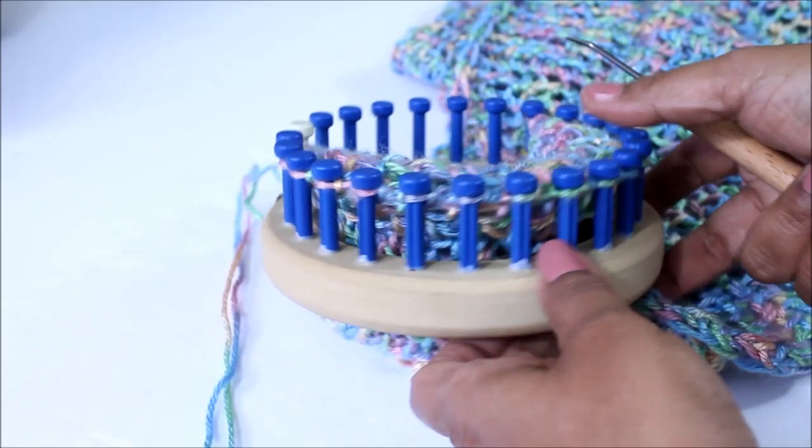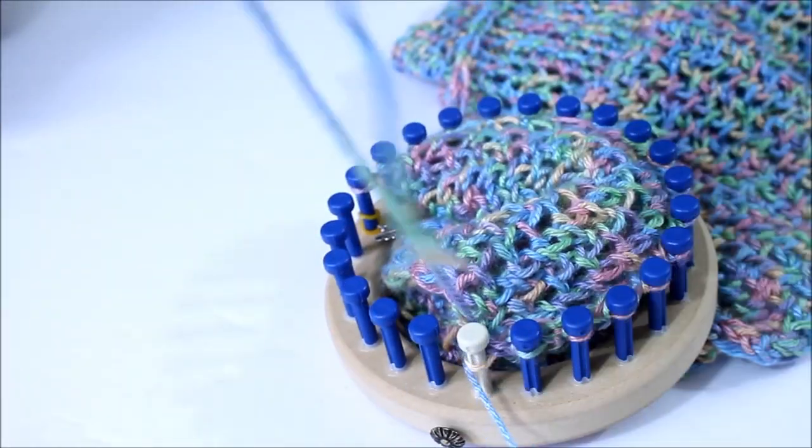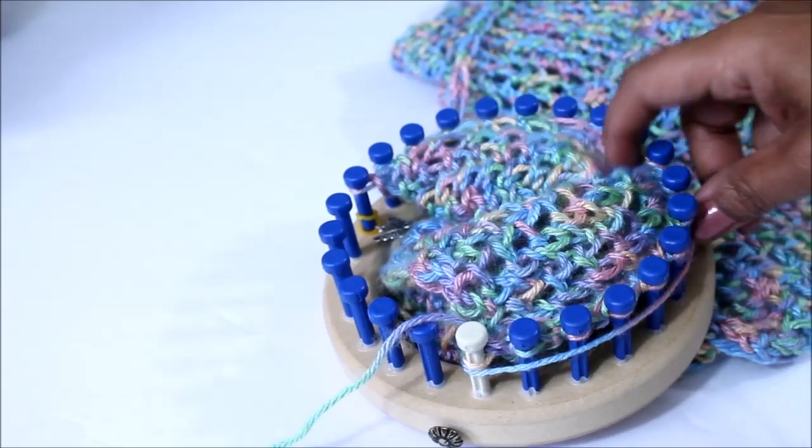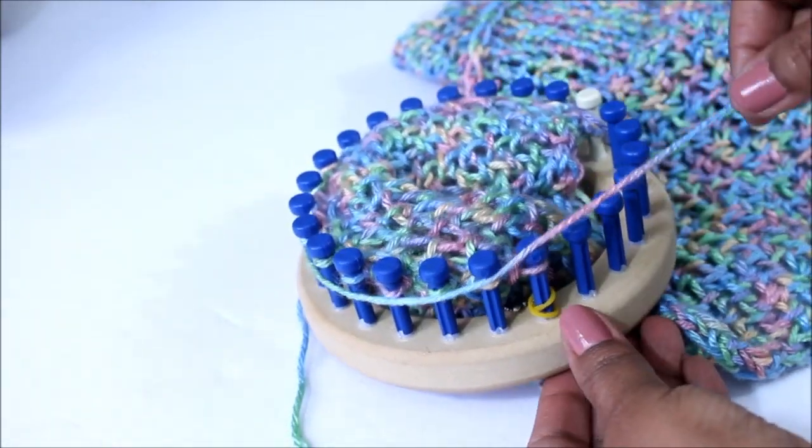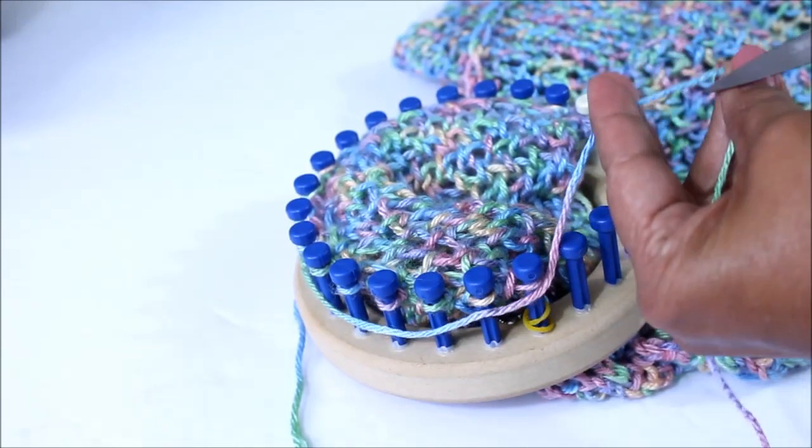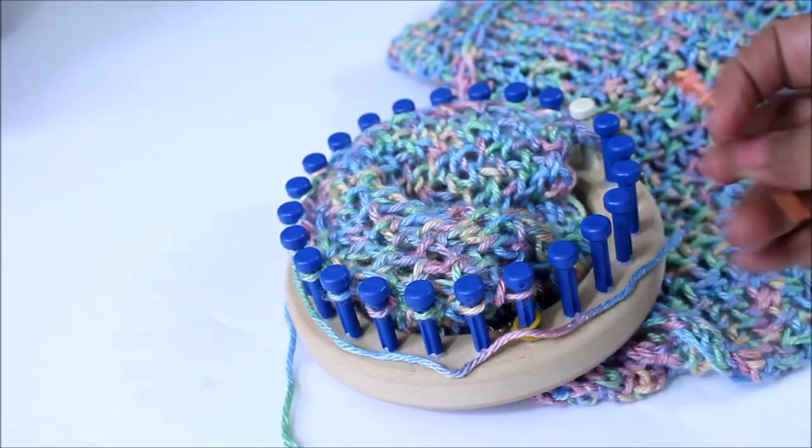After you knit off the last one, come back to the front and you're going to look for the working yarn and you're going to wrap it around almost the whole loom. Get your scissors, cut the working yarn and this is the yarn that you're going to thread your needle with.